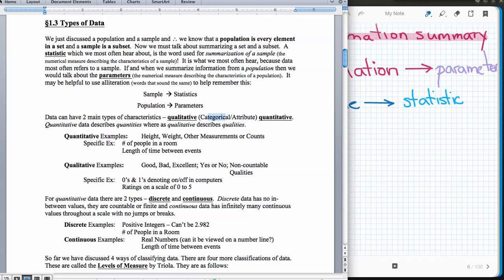Qualitative examples are categorical attribute data. Those would be things like good, bad, or excellent, yes or no. Non-countable qualities. Things that we can only define with a characteristic or a category. We sometimes get confused between qualitative and quantitative, because just because qualities are describing something does not mean they can't be numbers.